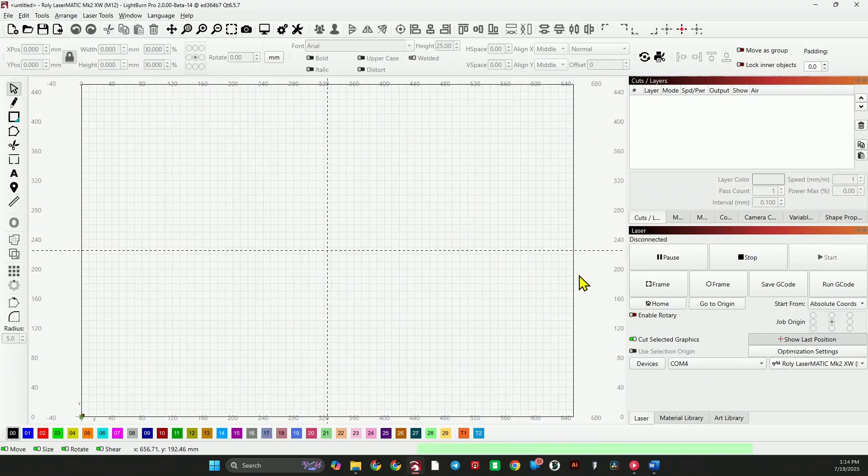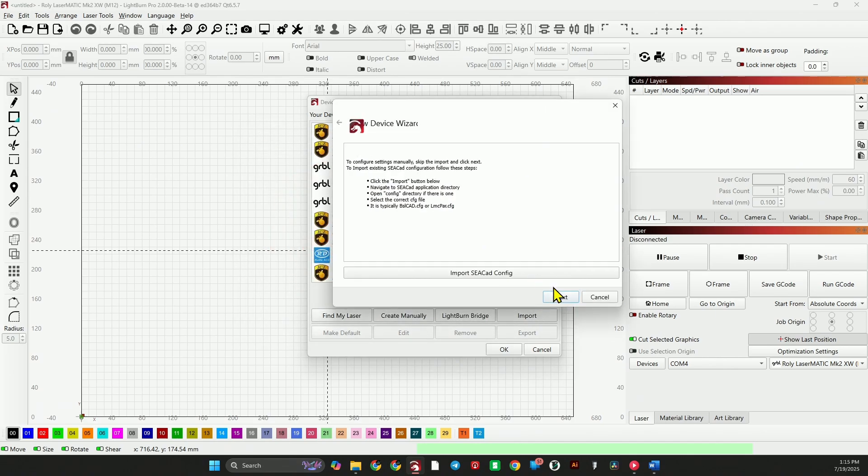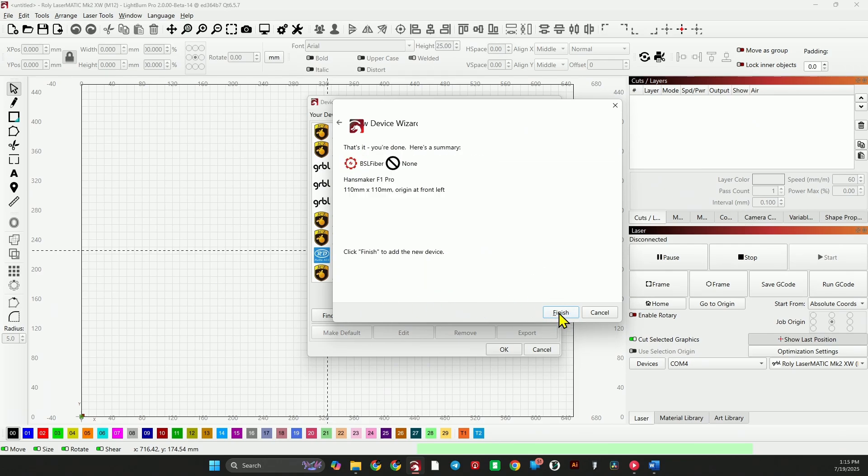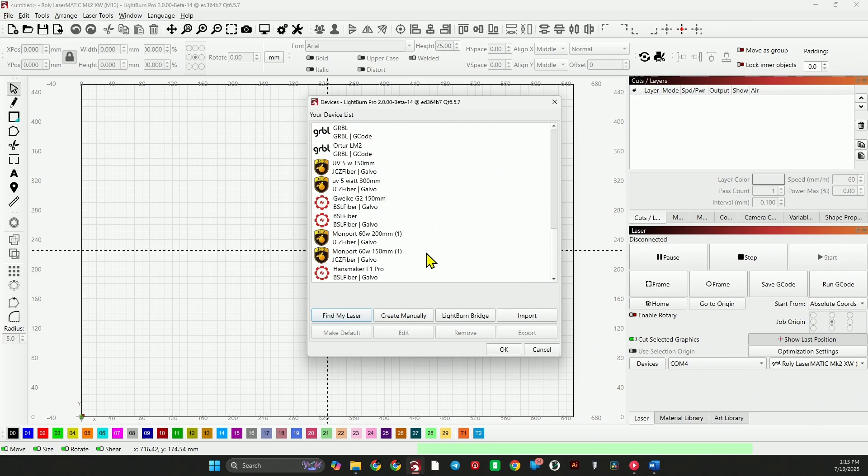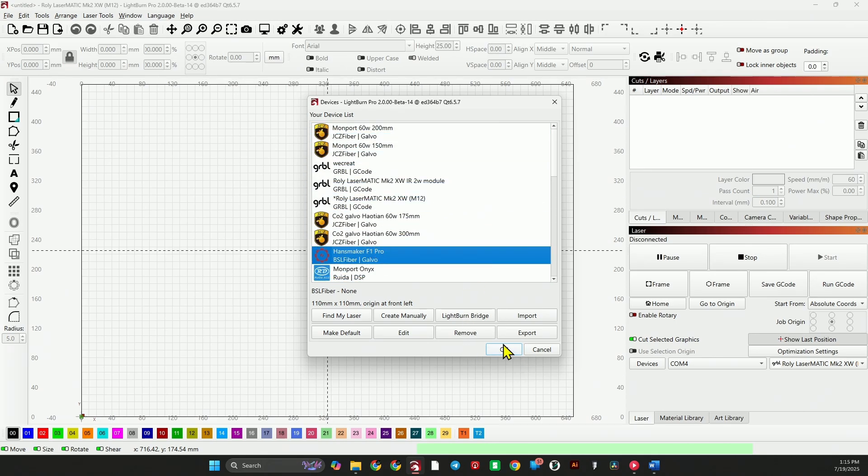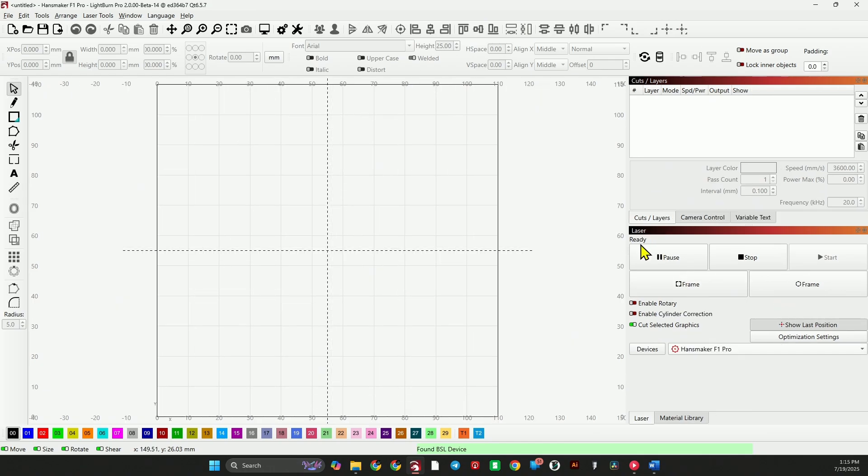Now we have our laser plugged into the PC. Go to devices. Find my laser. Click next. There it is. BSL fiber. We'll add the device. Hit next. HansMaker F1 Pro. Numbers are correct. Hit finish. Then it'll be at the bottom of the list. So, I'm going to move this up. I'm going to stick it right here. Hit OK. Then I'm going to select that from our list. And we have turned to ready and found BSL device. We are making progress.